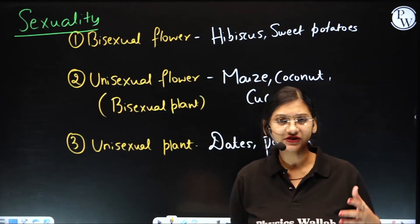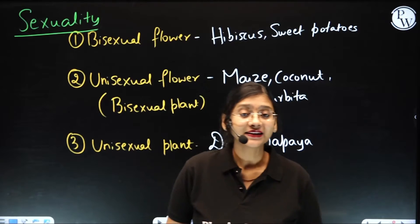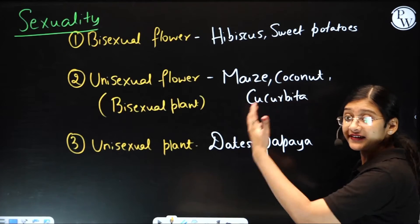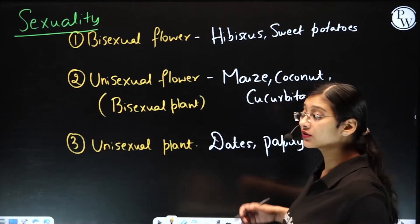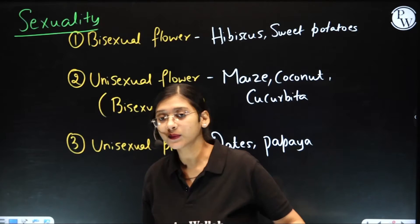So before getting into some of the examples of different types of pollination, let's see what are the different examples for different sexuality that we get to see.